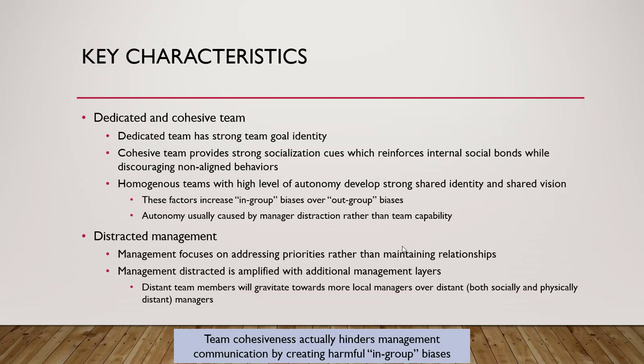This autonomy is usually caused by manager distraction rather than team capability. The team can be mediocre in performance, but because there are no signals coming back, the manager thinks the team has it handled and getting involved would only get in the way. So the manager keeps distant and works on other high priorities — which is very dangerous to the team's performance and their relationship with the manager. Management slowly begins to address priorities other than the team, and unfortunately also decides not to maintain relationships with the team.